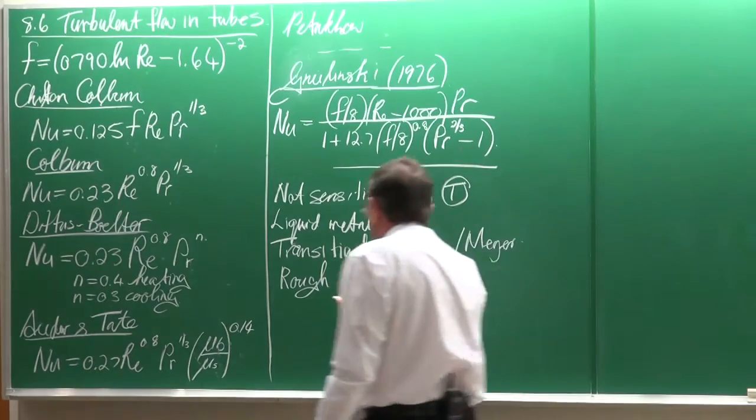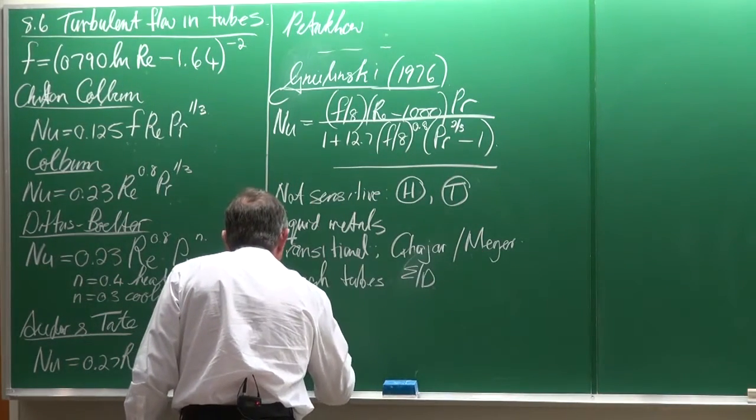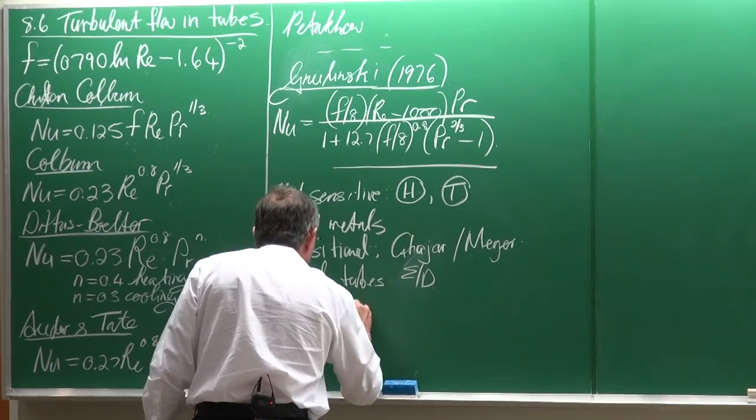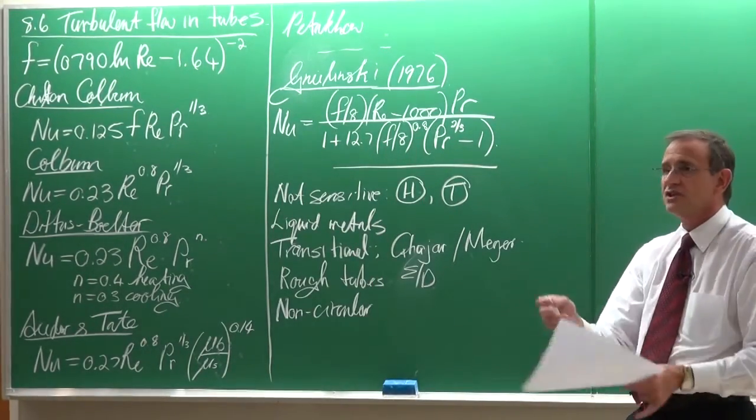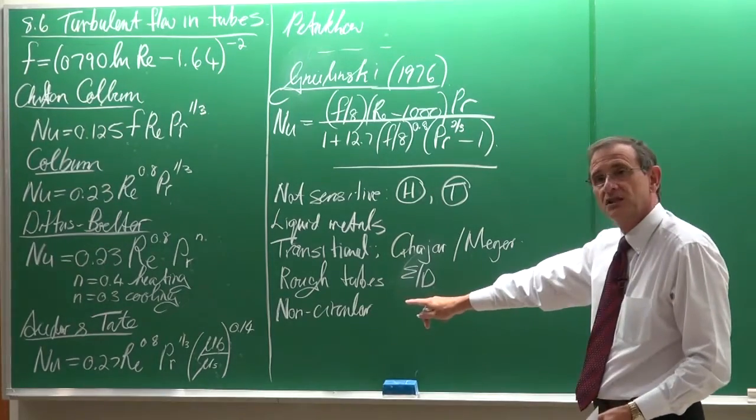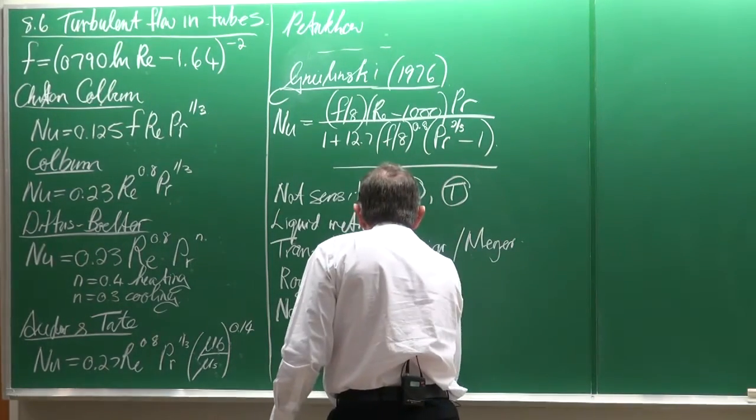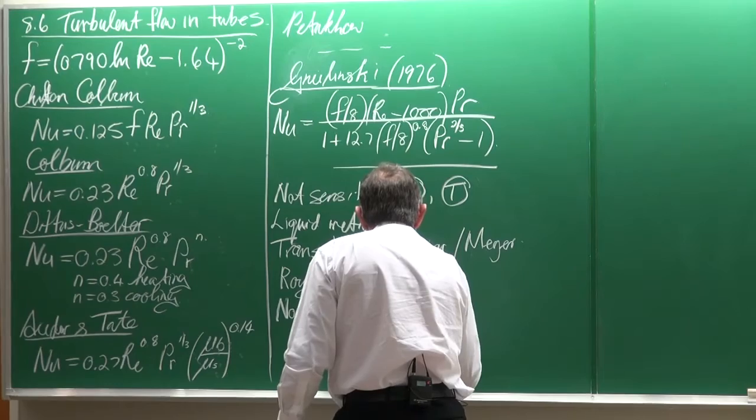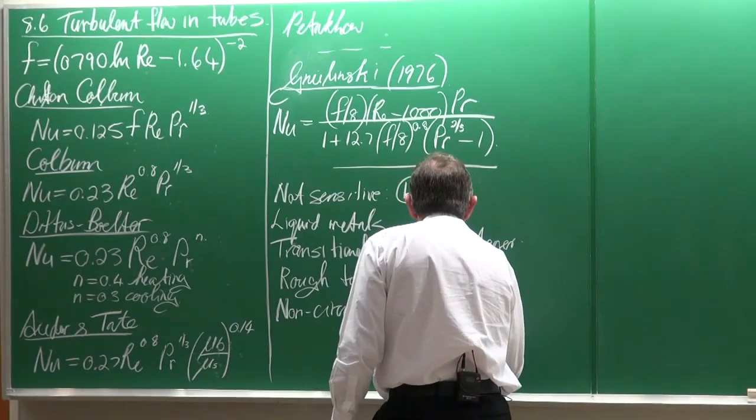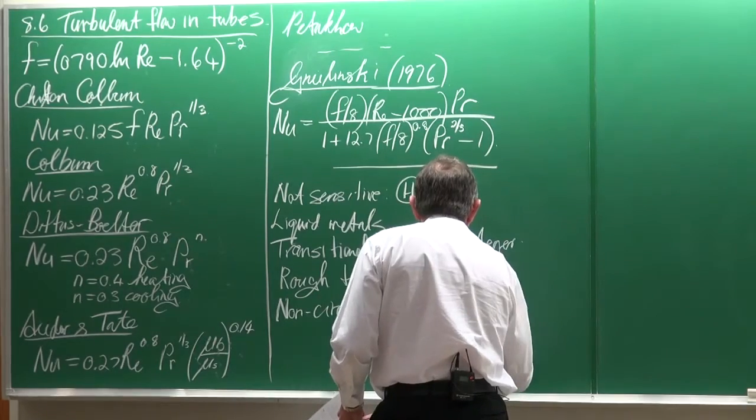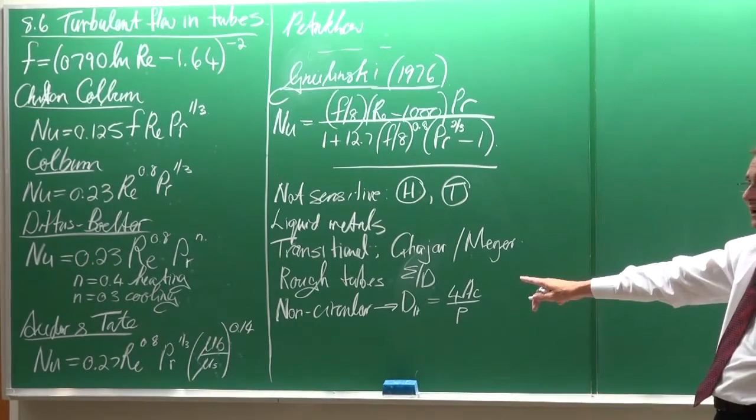Then, non-circular tubes. If the tube is non-circular. In the beginning of this chapter, we've looked at different types of geometries. And what it suggests here is that you can just use the hydraulic diameter, which we've defined as four times the cross-sectional area divided by the perimeter.